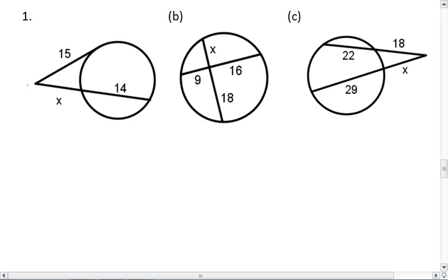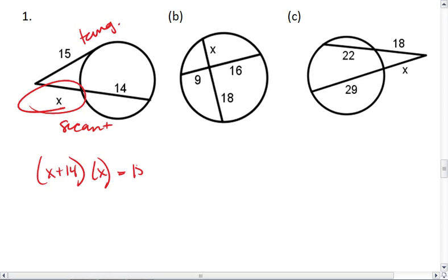For a, I'm dealing with a tangent and a secant. So I want to take my entire secant, x plus 14, times the area outside the circle, which is just x, equals my tangent times itself. I get x squared plus 14x equals 15 times 15, which is 225.